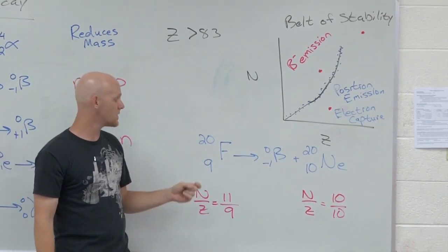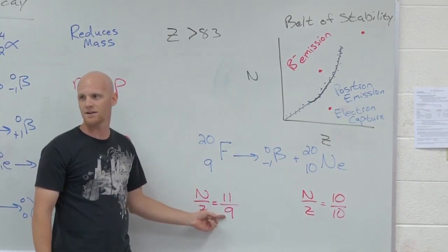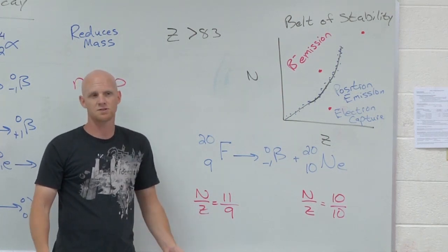If he's above the belt, the n over z ratio is greater than one? Beta decay. If it's less than one, positron emission or electron capture. Take your pick.